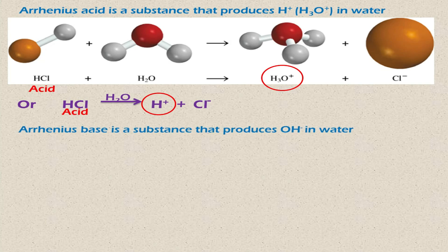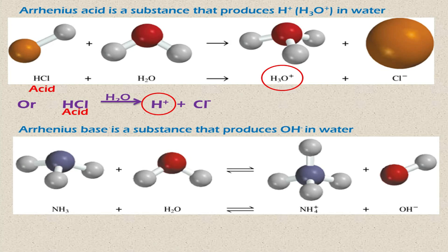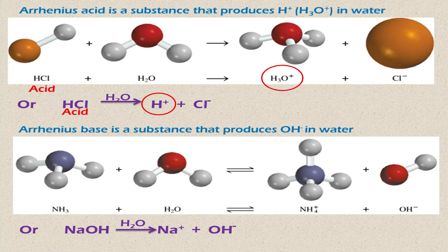An Arrhenius base is a substance that produces OH⁻ ions in water. For example, NH₃, whenever dissolved in water, gains an H⁺ ion from water and converts into NH₄⁺ ion and OH⁻ ion. Similarly, sodium hydroxide, NaOH, when it breaks down in water, gives Na⁺ ion and OH⁻ ion. In both examples, OH⁻ ions are produced in water. So according to Arrhenius' definition, NH₃ and NaOH are both bases because they release OH⁻ ions in water.